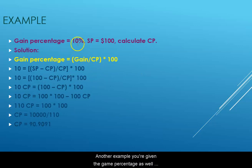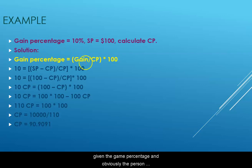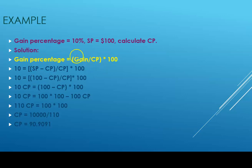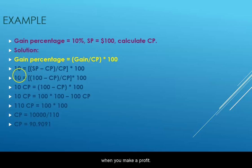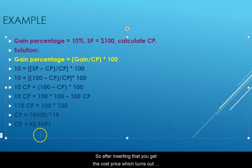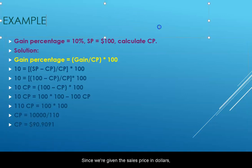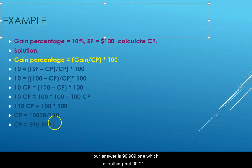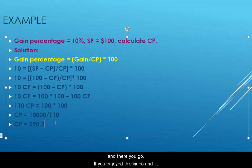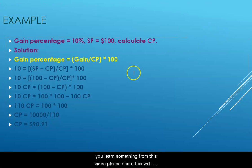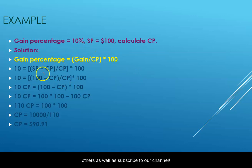Another example: you're given the gain percentage as well as the sales price, and asked to calculate the cost price. Since the person made a profit, use the gain percentage formula — gain divided by cost price times one hundred — and replace gain with sales price minus cost price, since sales price is always more than cost price when you make a profit. After inserting the numbers, the cost price turns out to be ninety point nine one dollars.